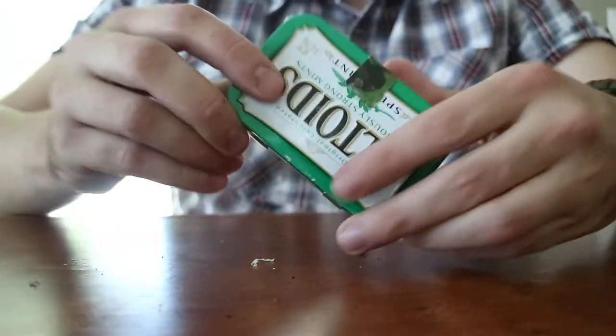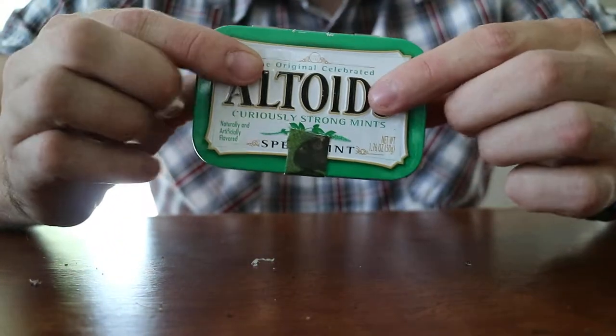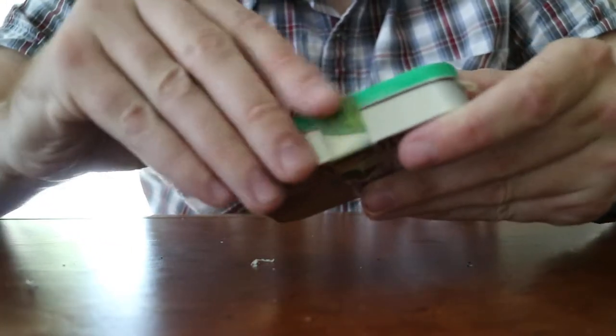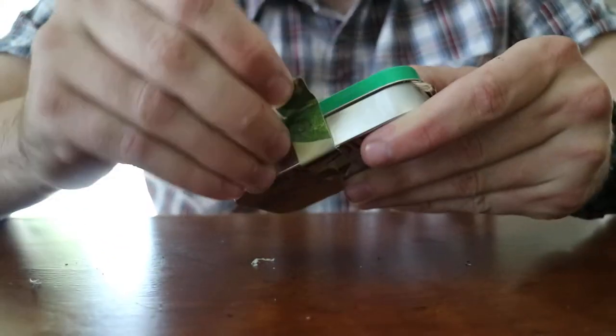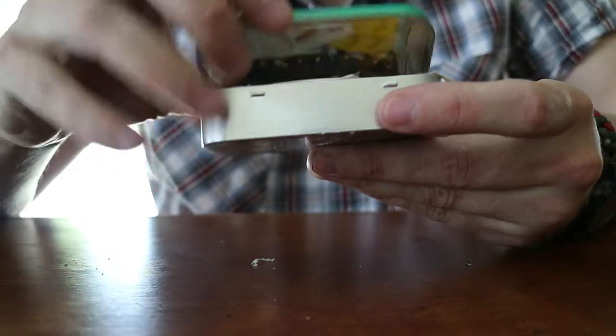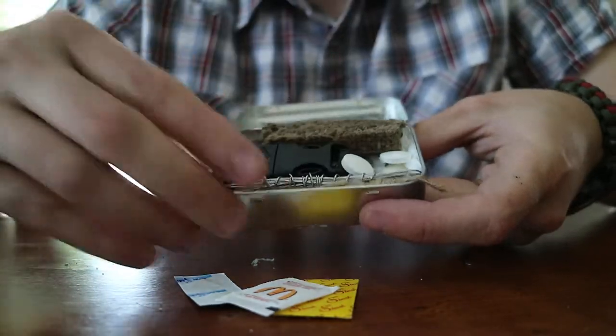inside you'll find this fancy, well not really fancy, but a standard mint tin here. It'll have some tape on it, take the tape off, and inside all kinds of goodies.